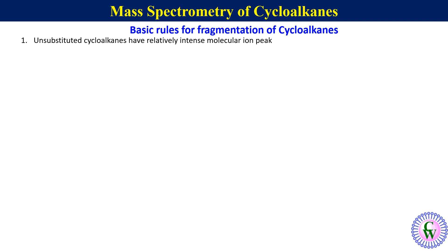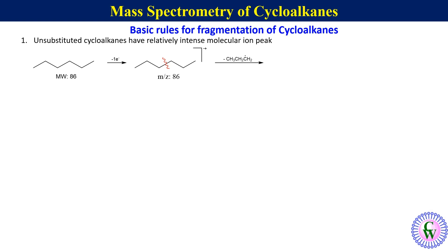Let's understand this point with an example. Suppose we have hexane, which has a molecular weight of 86. After elimination of one electron during electron bombardment, it leads to the formation of a molecular ion with an m/z value of 86. Breaking this C-C bond will eliminate a propyl radical and a propyl cation with an m/z value of 43.